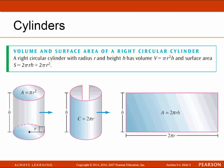Next, we're going to talk about cylinders — specifically the volume and surface area of a right circular cylinder. A right circular cylinder with radius R and height H has volume V equals pi R squared H, and surface area equal to 2 pi R H plus 2 pi R squared.